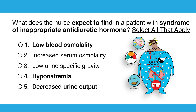Option one: low blood osmolality — yes, low liquidy labs, that's what we're looking for. Option two: increased serum osmolality — no, that's DI, dry on the inside. Option three: low specific gravity — no, in SI we have very sticky, thick urine with high specific gravity. Option four: hyponatremia — yes, low liquidy labs. And option five is also yes — decreased urinary output, since in SI we stopped urinating.